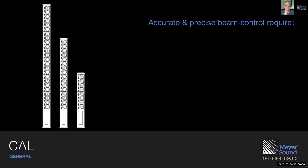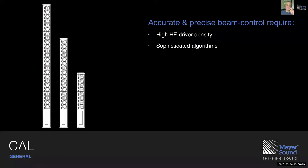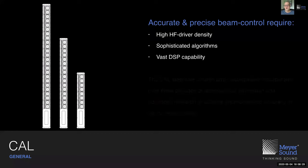CAL comes in three models. In order to have accurate and precise beam control, we require high driver density — specifically high-frequency driver density — which are the 20mm tweeters used in CAL. Sophisticated algorithms achieve the beam steering, requiring a vast amount of DSP capability. All of that lives within that single loudspeaker enclosure, based on three decades of technological innovation and advanced research.